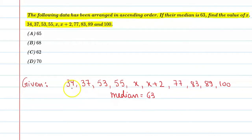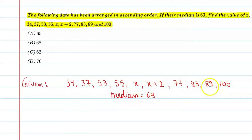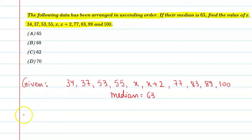तो अगर आप इसे count करेंगे, तो देखिए: 1, 2, 3, 4, 5, 6, 7, 8, 9, 10. तो total 10 observations. तो देखिए, जब 10 observations हैं, तो number of terms even है. So let's start the solution.